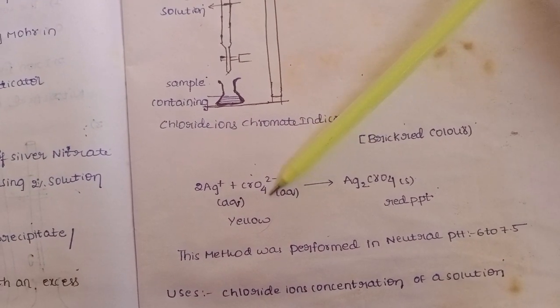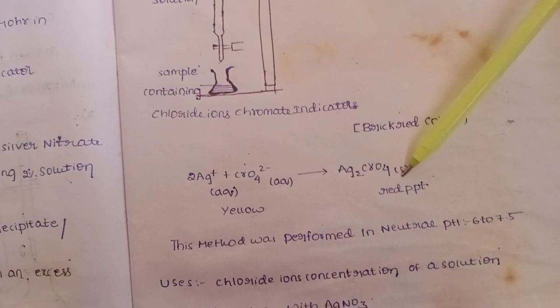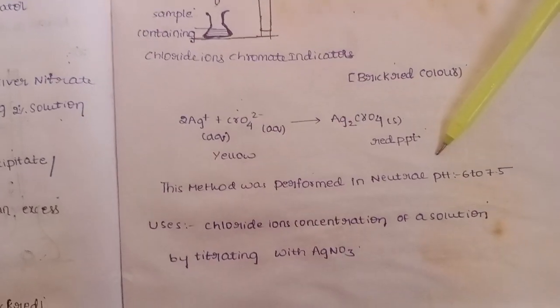The CrO4 2- reacts to form Ag2CrO4. Initially yellow in color, it later forms a solid red precipitate.